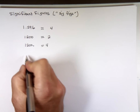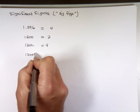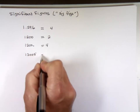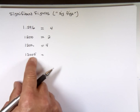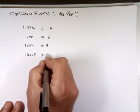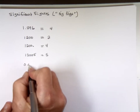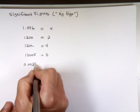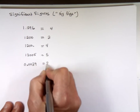Or if I have 1,3005 — if you have zeros between significant digits, these are also significant digits. So how many significant digits here? Five of them. And 0.00029 has two significant digits.